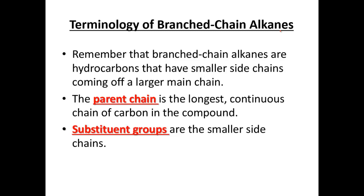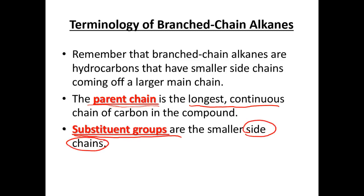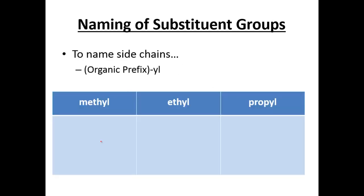Branched alkanes are going to have all single bonds, so we still have our alkanes. But now we're going to add what's going to be known as our parent chain, which is the longest continuous chain of the hydrocarbons. And then we're going to be branching off — our substituent groups are the smaller side chains.